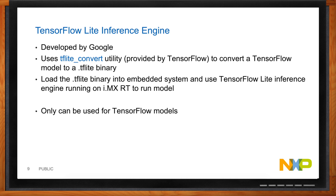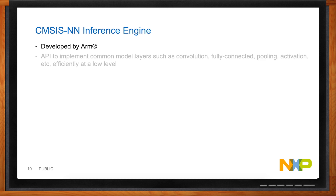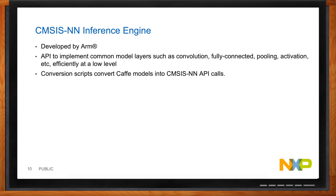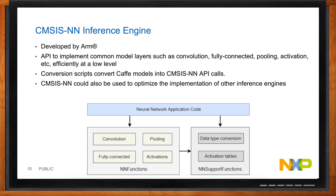The CMSIS-NN inference engine is developed by ARM. It provides an API to implement common model layers — such as convolution, fully connected, pooling, and activation — very efficiently. You translate your model to run using these simplified API calls; ARM provides conversion scripts for Caffe models. CMSIS-NN can also be used to optimize the implementation of other inference engines, since it's essentially just an API to call these common model functions.